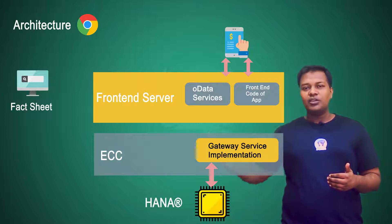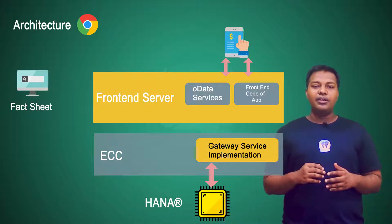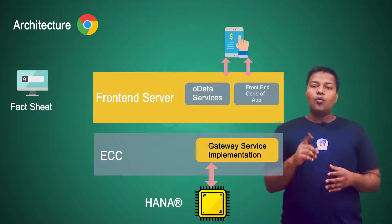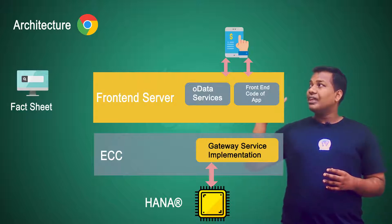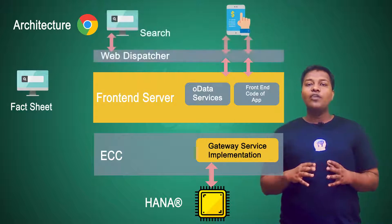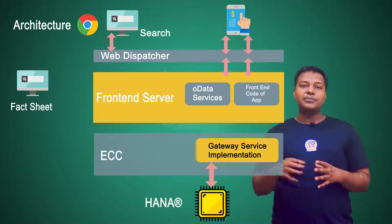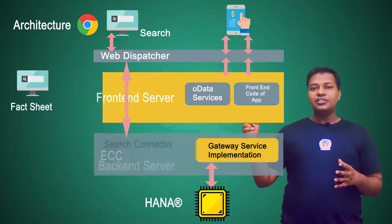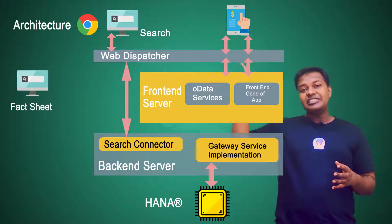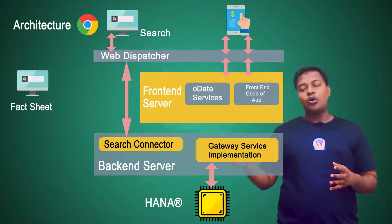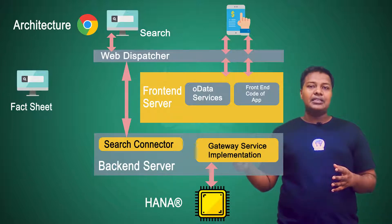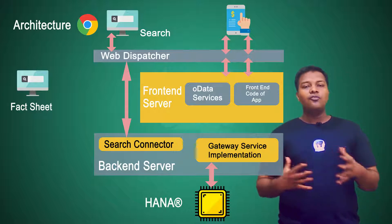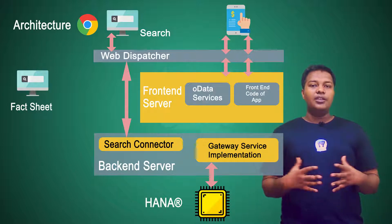So let's remove the 'any database' option and bring in HANA database only when running the fact sheet application. One more component we have is an additional layer of web dispatcher. In the backend, you also have a search connector, so your application can directly talk to your HANA database and say: I need to search for this particular keyword — just find me anything related to that within your data.